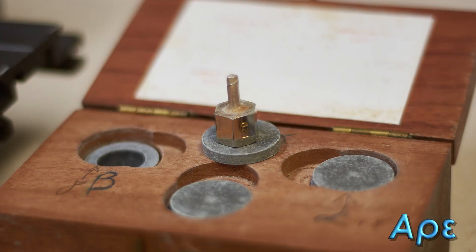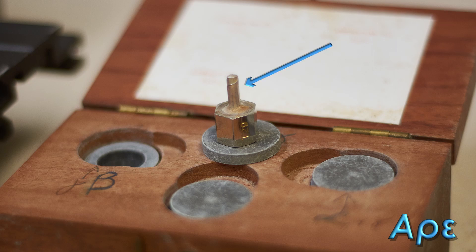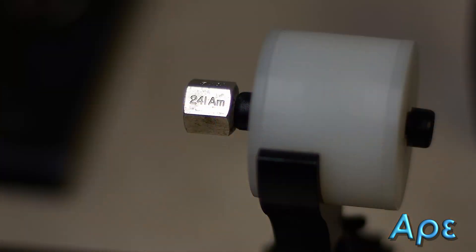The source used for this experiment is a cup source of americium 241. It is named a cup source as it is shaped like a small thick steel cup with the opening to the bottom of the source as seen here. It also has a stem on top so that it can be placed in a holder, as shown in this photograph ready for the experiment.